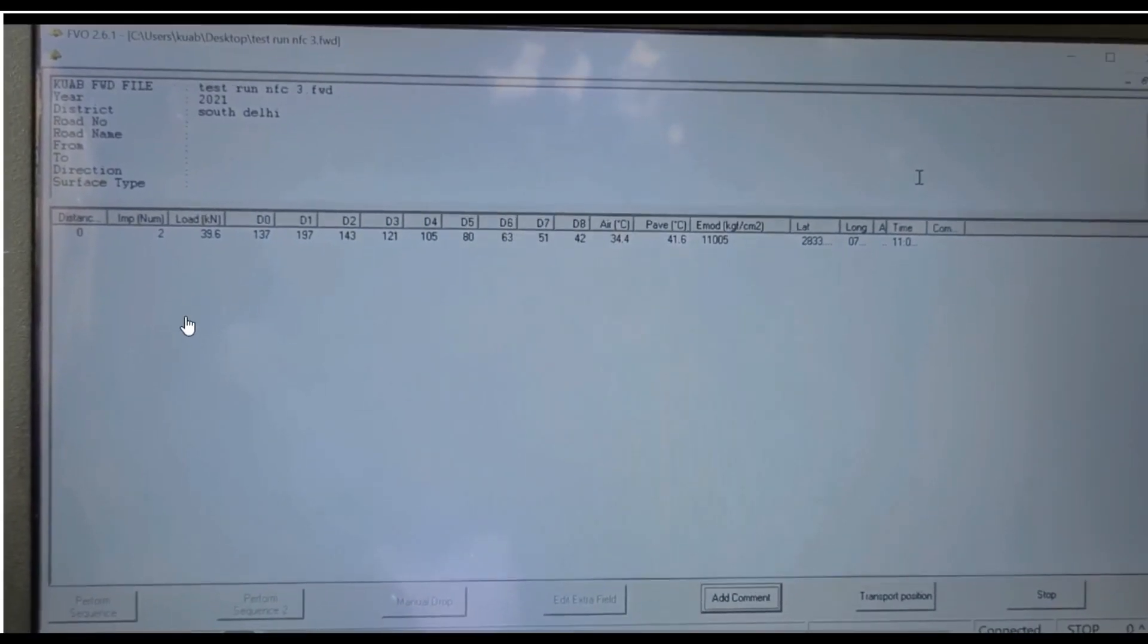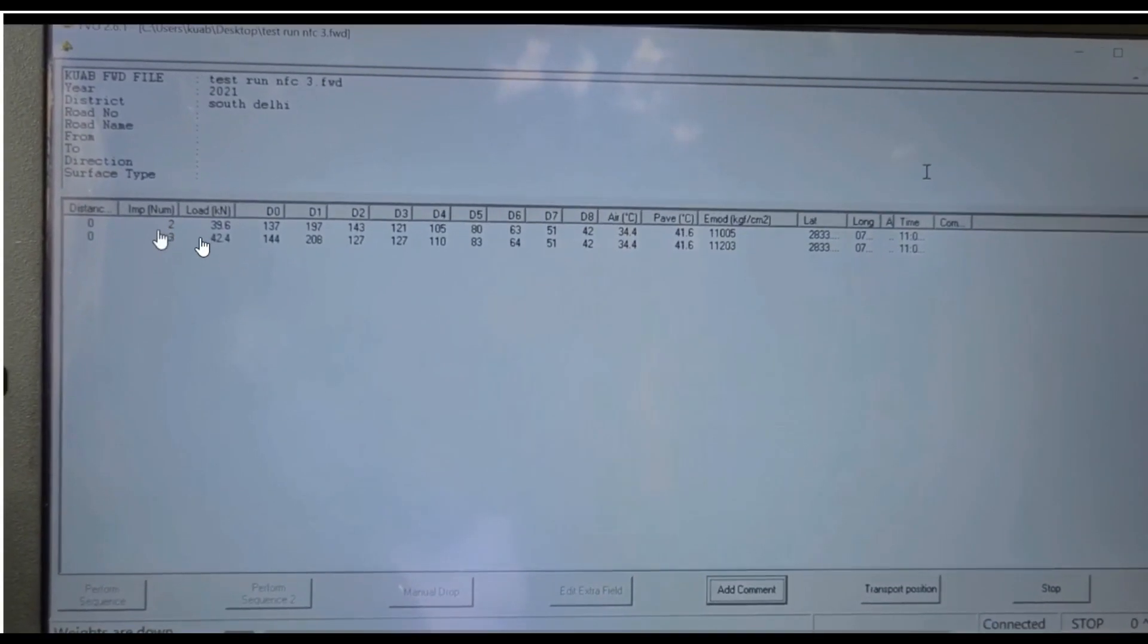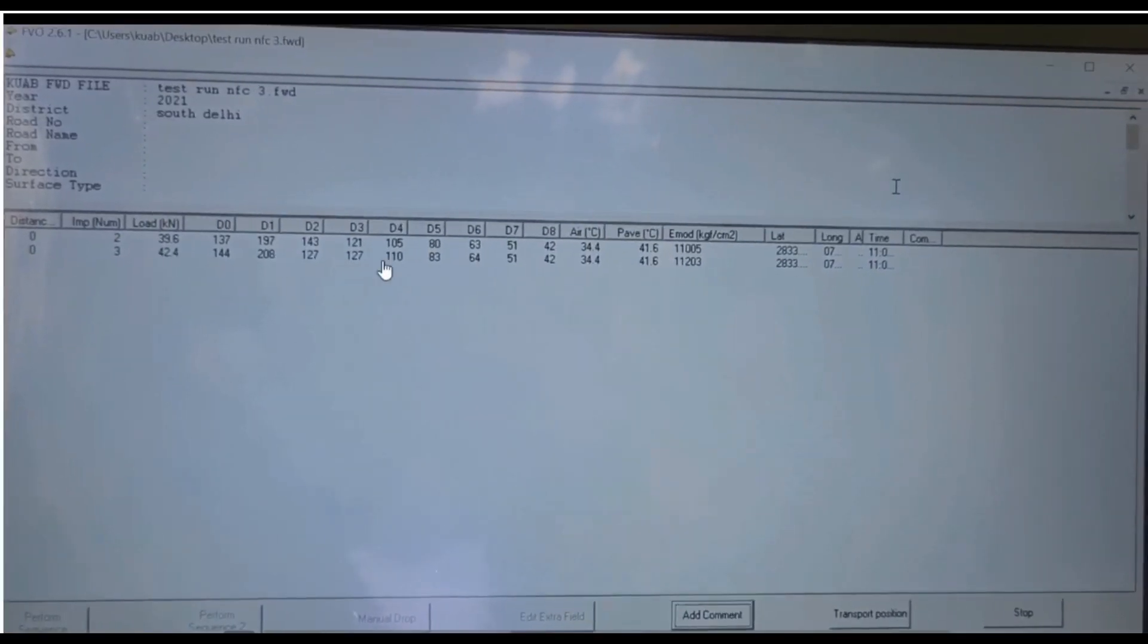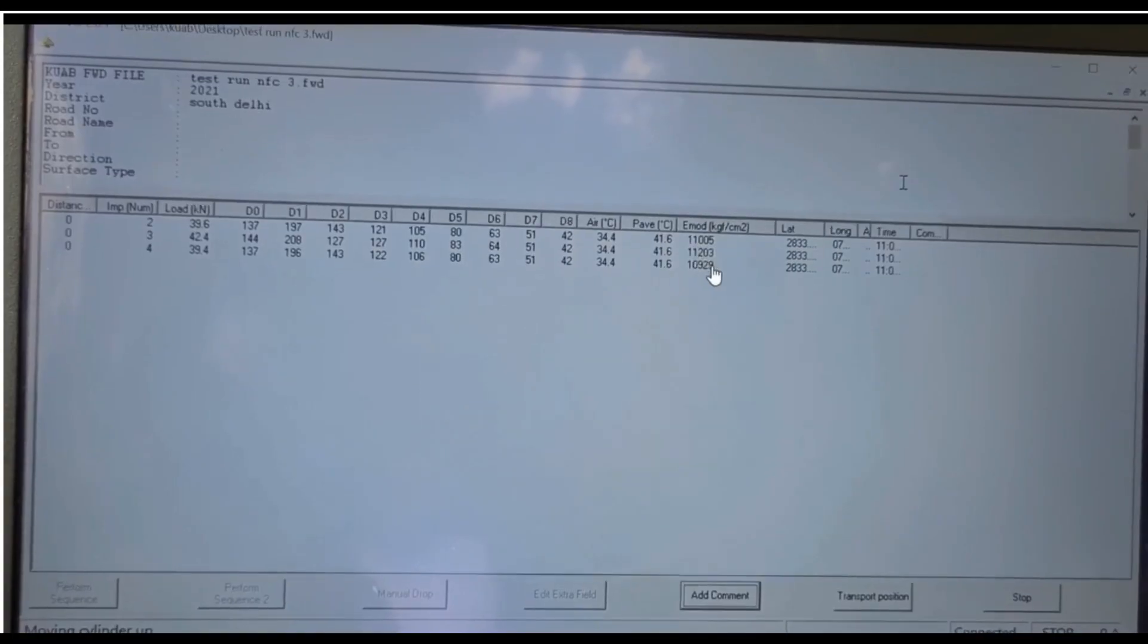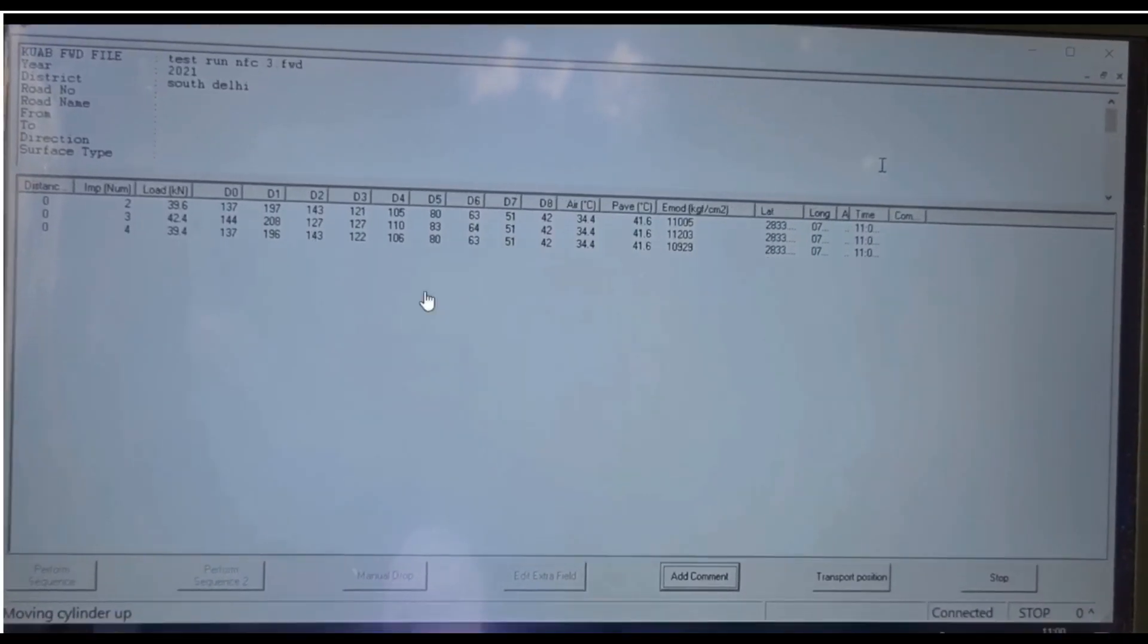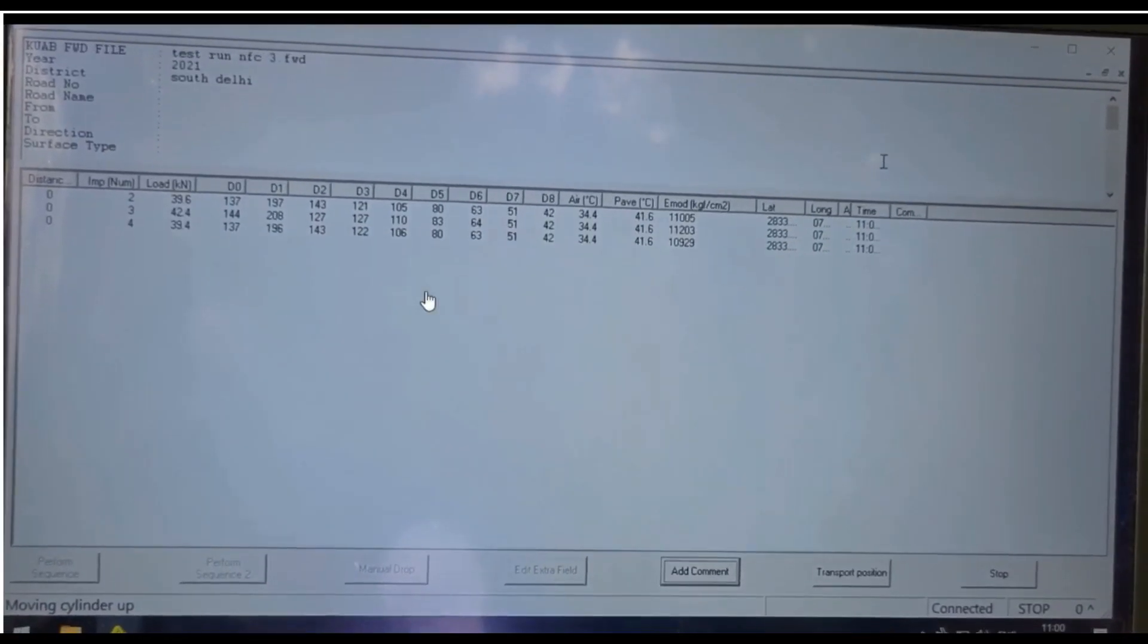Now these are the readings which you get. This is the load and deflections in D0 to D8 and then latitude, longitude, temperature of the pavement. Everything you get in the DAS system, that is data acquisition system.